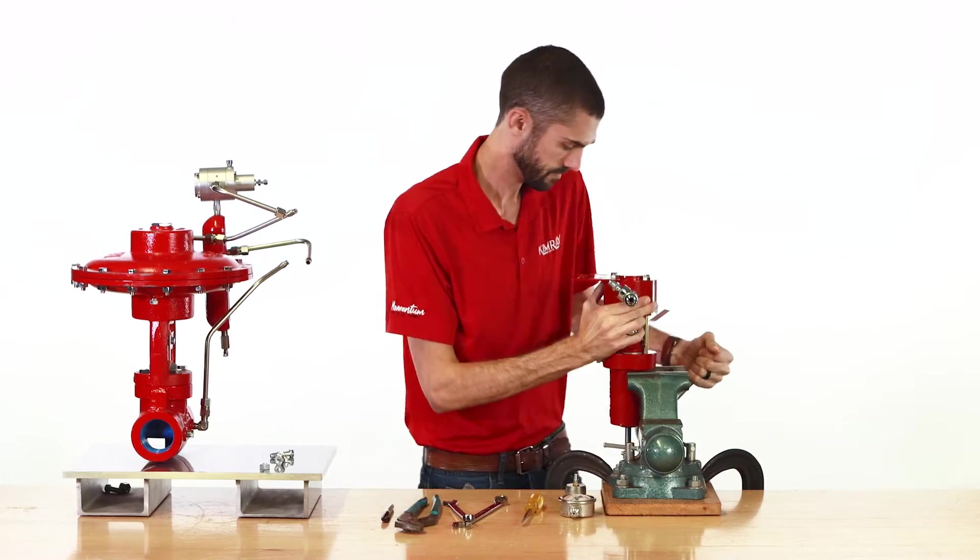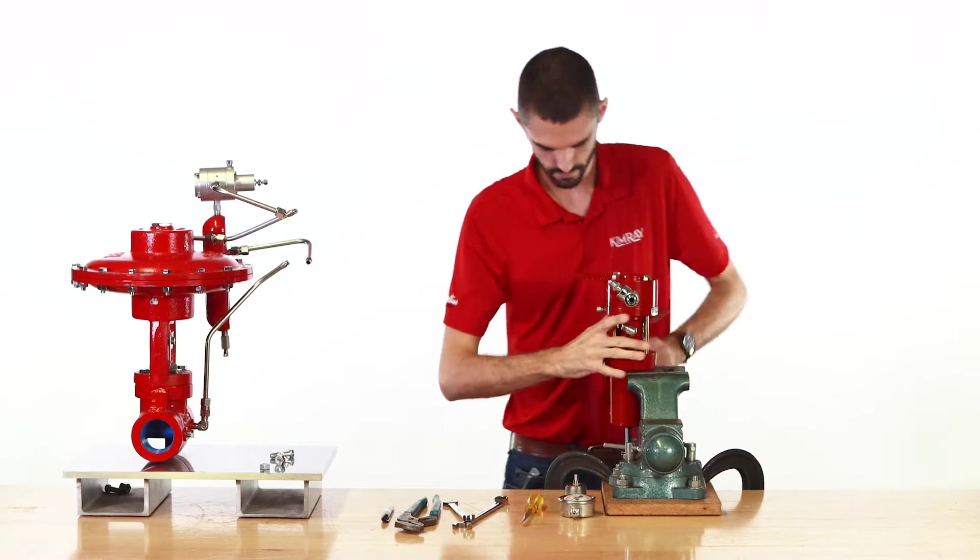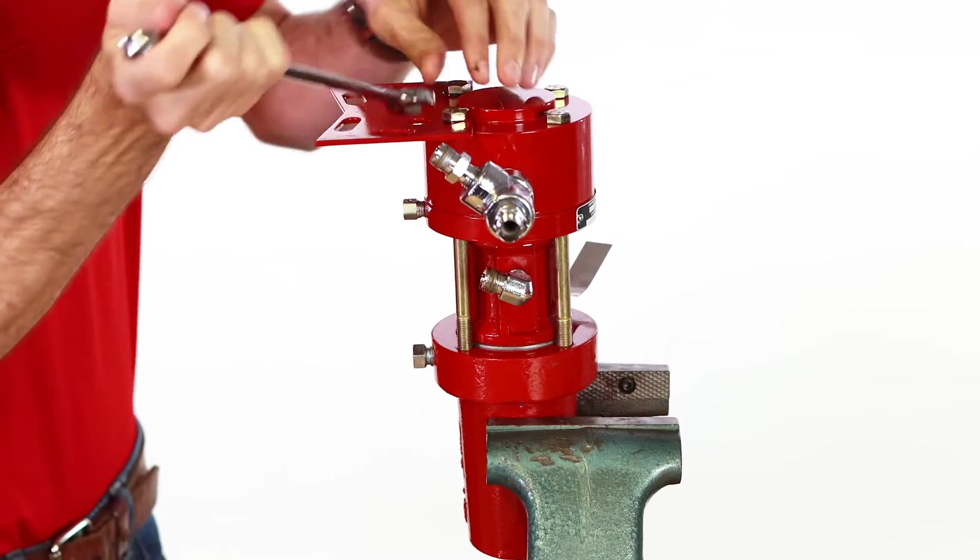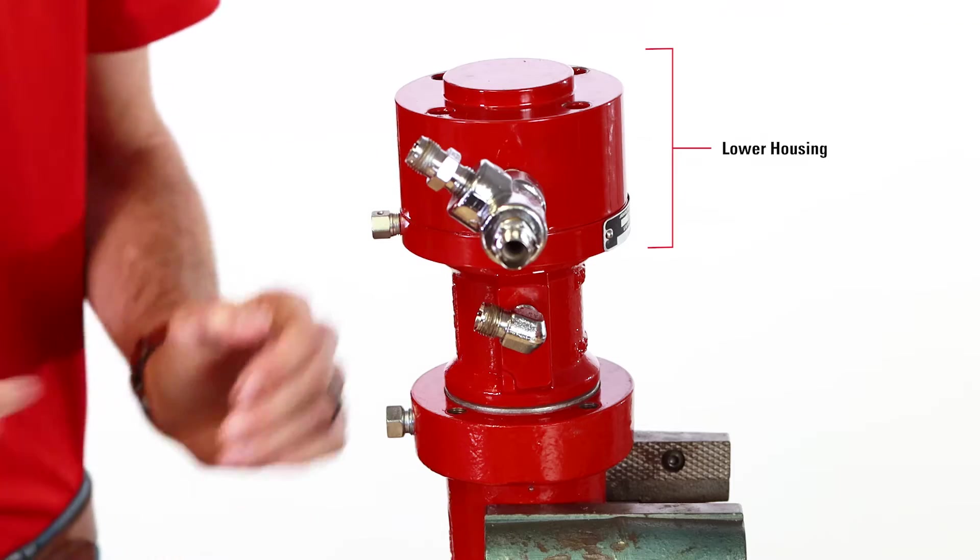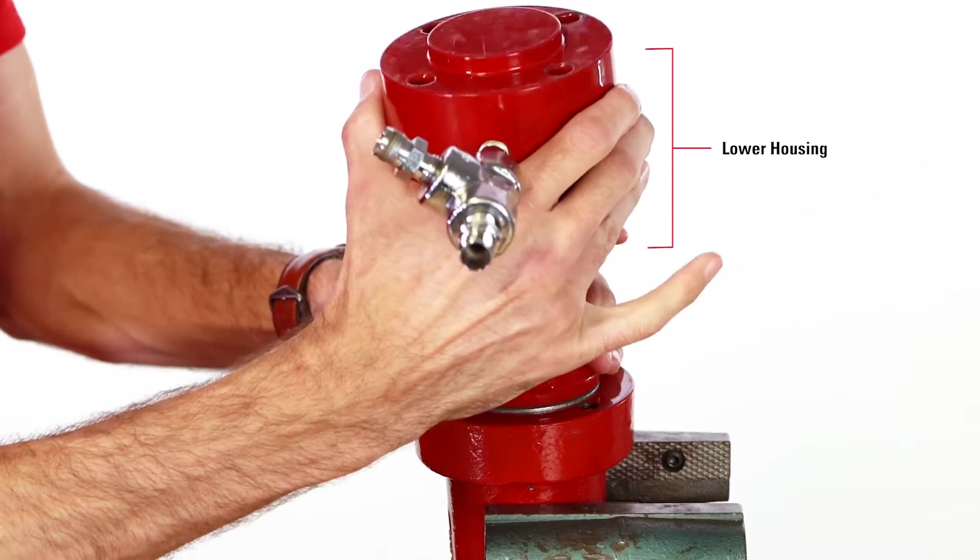Turn the pilot upside down and secure it in a vise. Use a 9/16ths wrench to remove the four screws from the body. Separate the lower housing and the pilot and set them aside.